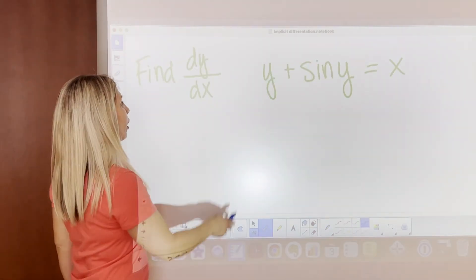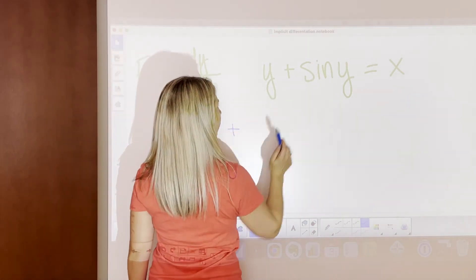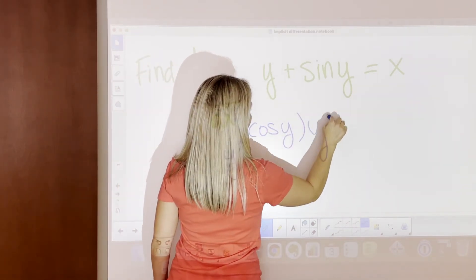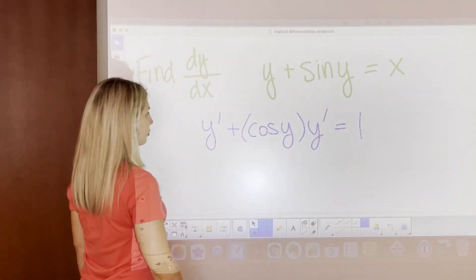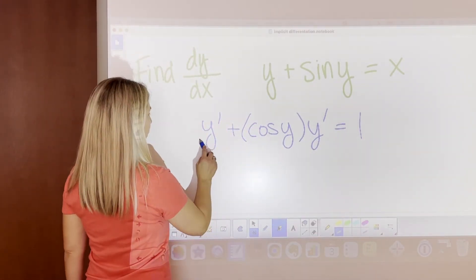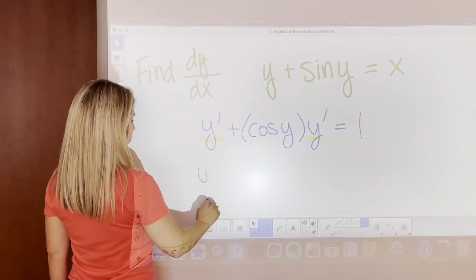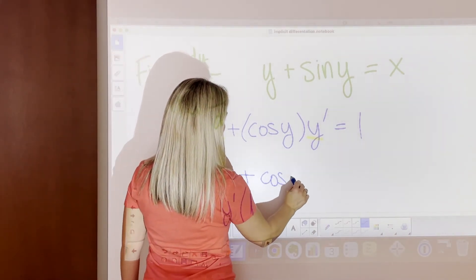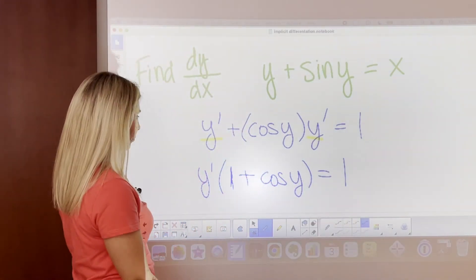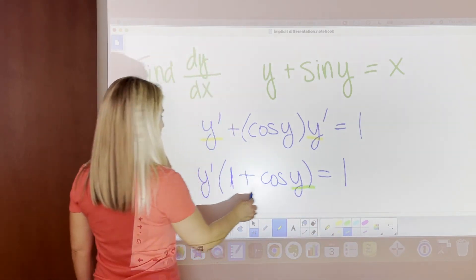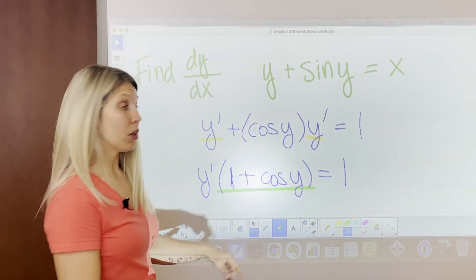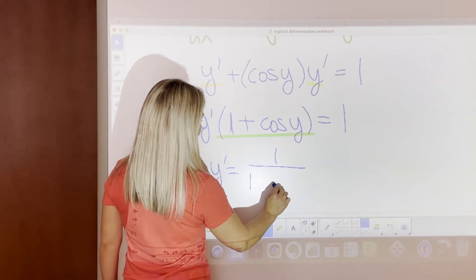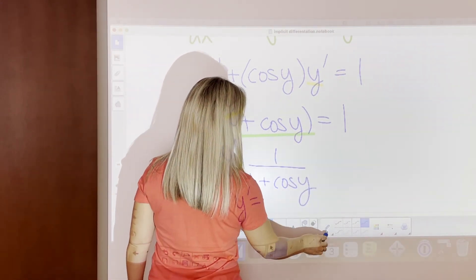For this trig example: derivative of y is y prime, plus derivative of sine(y) is cosine(y)·y prime, equals derivative of x which is one. Pull out the y primes: y prime times (1 plus cosine(y)) equals one. Divide to get y prime equals one over (1 plus cosine(y)).